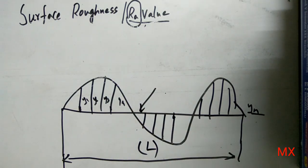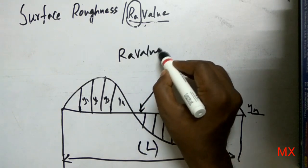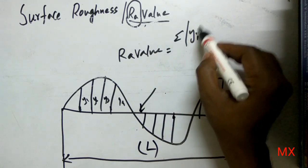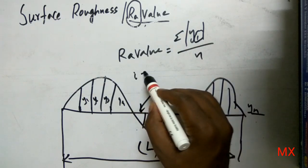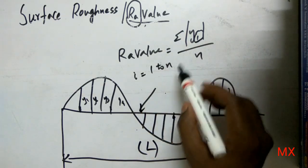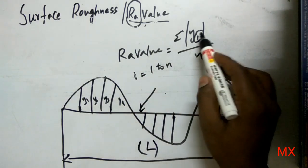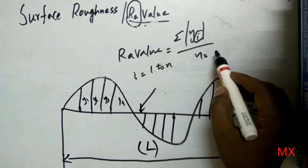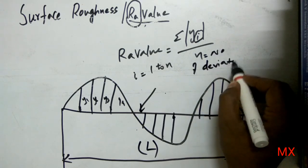Now we are going to see how to measure the Ra value. The formula for Ra value — the quantitative measurement of surface roughness — is the summation of Yi divided by n, where i equals 1 to n, that is Y1, Y2, Y3 up to Yn. So summation of Yi divided by n, where n is the number of deviations.